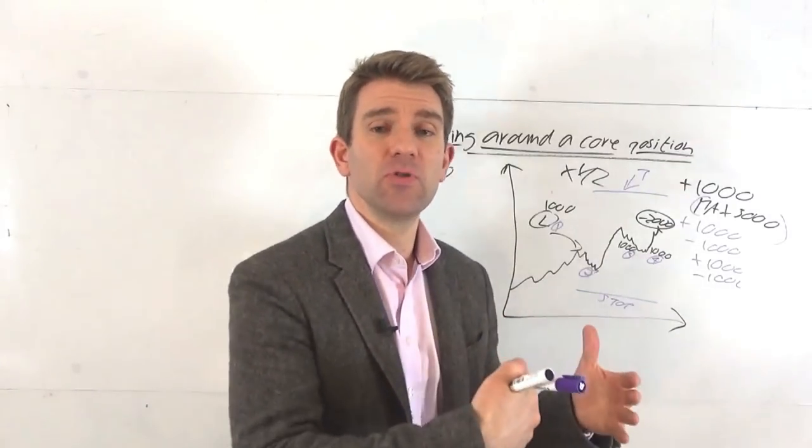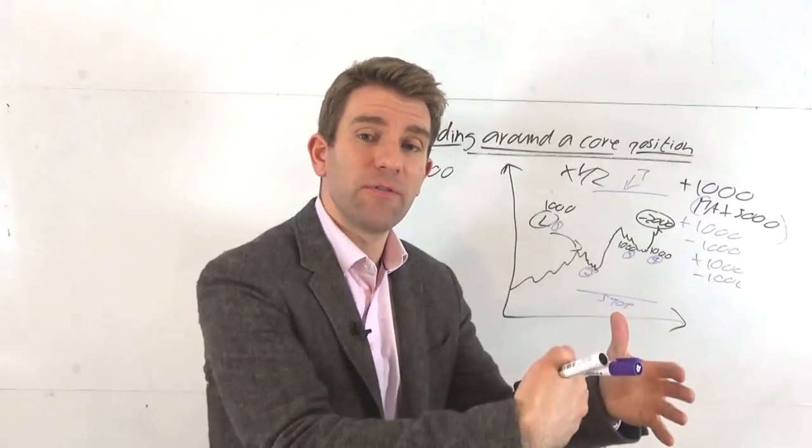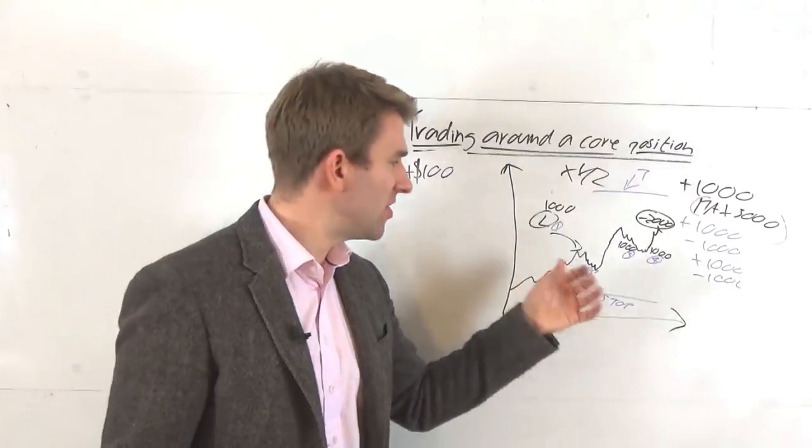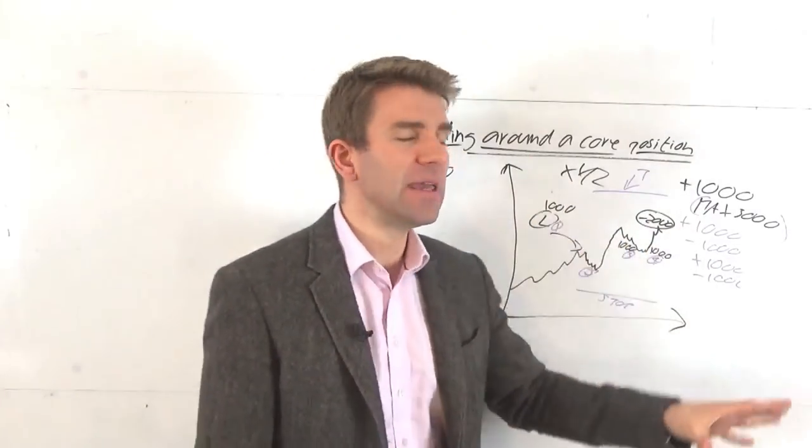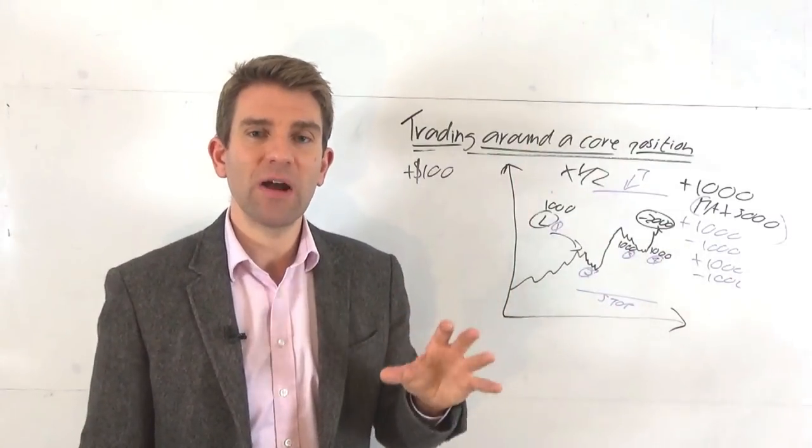So you've got the core position. Market moves in your direction, maybe pulls back, buy some more. The point is you take it off and then you take some on and off, some on, off. But you always have that original thousand shares or whatever that may be, but you're adding more, you're taking off more. You're just basically trading around it and using other strategies to help you get more juice from the market.